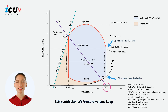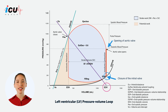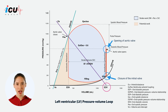This phase is represented by a vertical line moving upwards on the right side of the loop. Key events in this phase include the closure of the mitral valve and the maintenance of a closed aortic valve, resulting in a rapid rise in ventricular pressure.